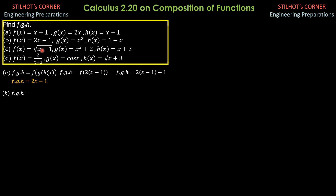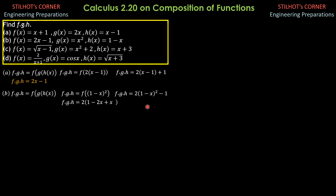For part b, f of g of h is f of g of h of x. Since this is h of x, we substitute into x for g of x: 1 minus x. So f of g of h of x is f of quantity (1 minus x) squared. And f of g of h is equal to 2 times quantity (1 minus x) squared minus 1. Simplifying, we have 2 times (1 minus 2x plus x squared) minus 1, which is 2 minus 4x plus 2x squared minus 1. Therefore, f of g of h is equal to 2x squared minus 4x plus 1. That's it for part b.